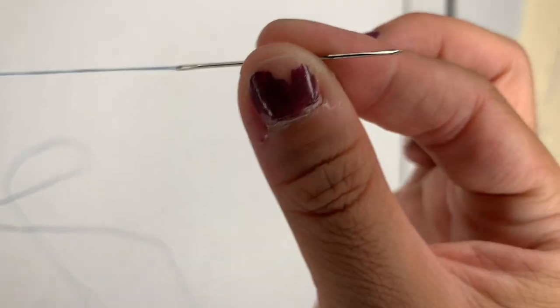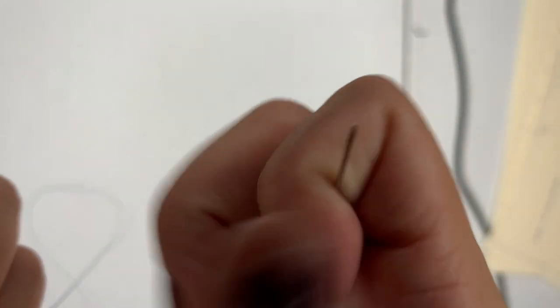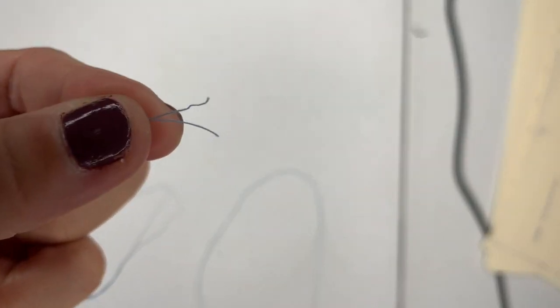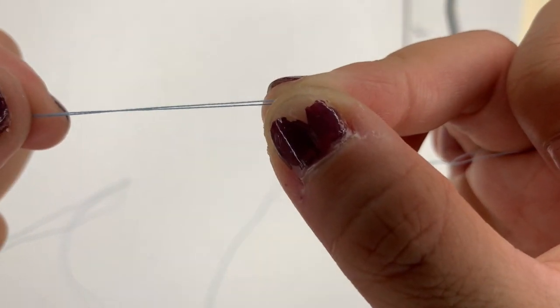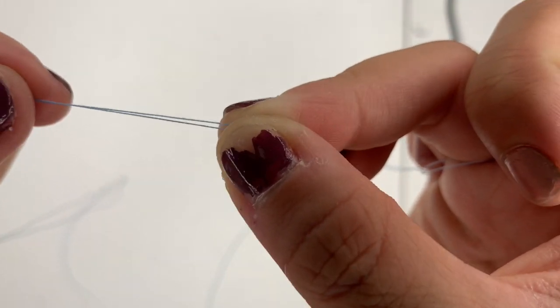I'm going to pull the needle into a loop. I'm going to keep my ends lined up, so that way I'm actually creating a double thread because I've got two threads running through here.